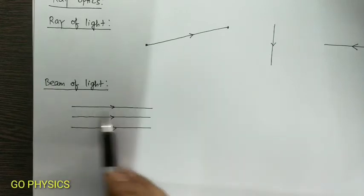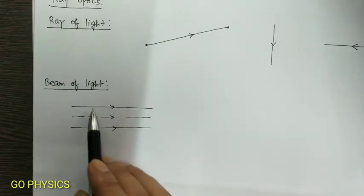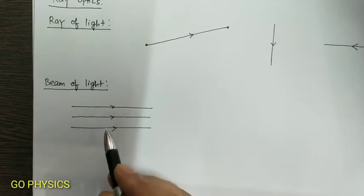In this case, all the rays are parallel to each other. So this beam of light is a parallel beam.